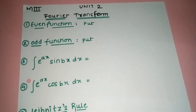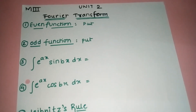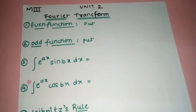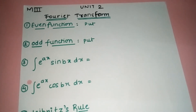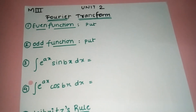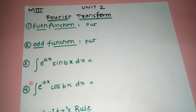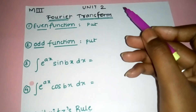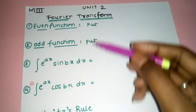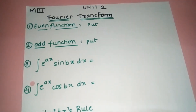Hey guys, welcome back to another video. In this video we are taking Unit 2 — we have completed Unit 1, so please go back to our previous videos to see that. Unit 2 is about transformations: first Fourier transform and then Z transform. In the first video lecture I'll cover all the formulas so it'll be easy.